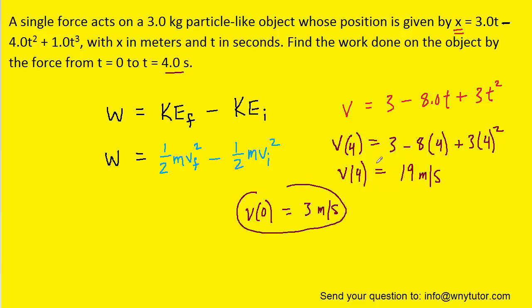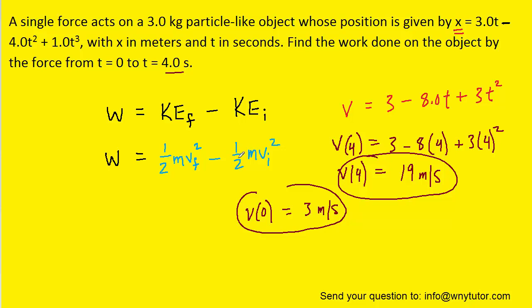So with the initial speed and the final speed, we're going to be able to plug them into the work kinetic energy equation and solve for the work. It might be useful to first factor out a 1 half m, since that appears in the first and second term. And now we can proceed to plug in the mass and the speeds. And when we simplify that on our calculator, we get approximately 528 joules.